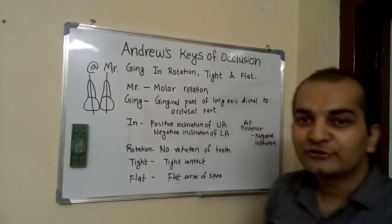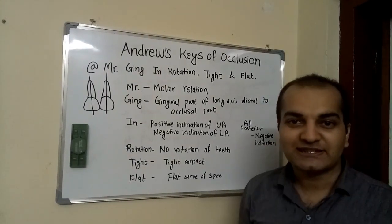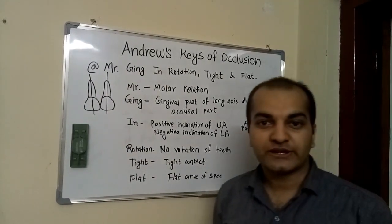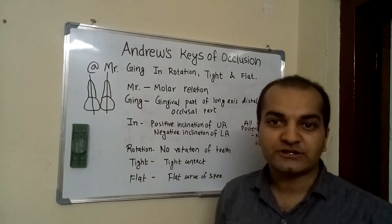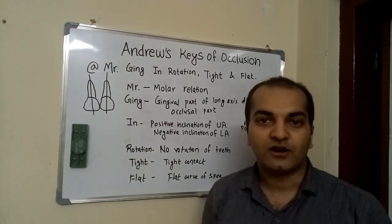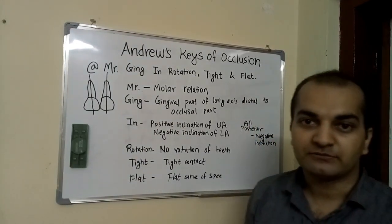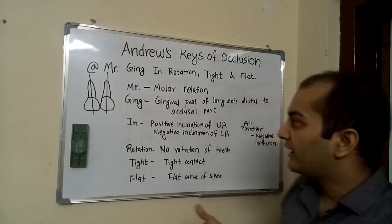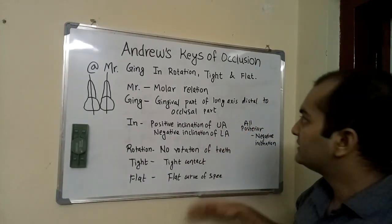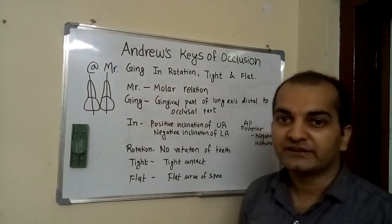Hello everyone. Today we shall discuss Andrews' six keys of occlusion. These six keys of occlusion were given by Andrews in the 1970s after studying 120 study models of patients. These different keys of occlusion can be memorized with the help of the mnemonic: